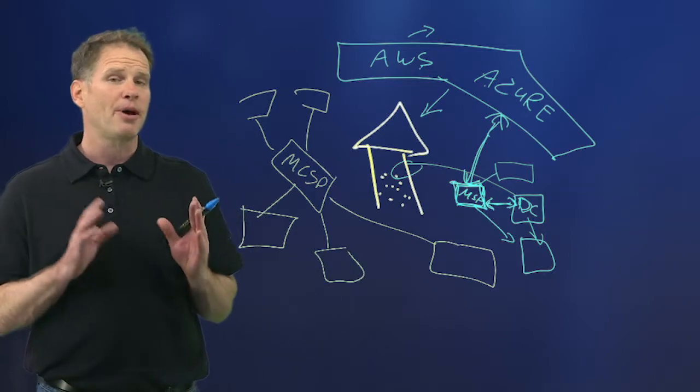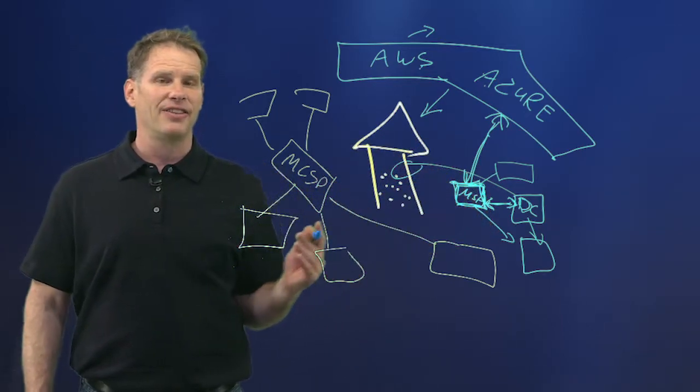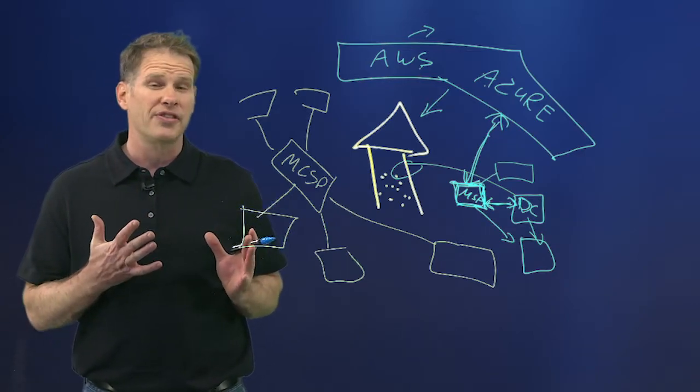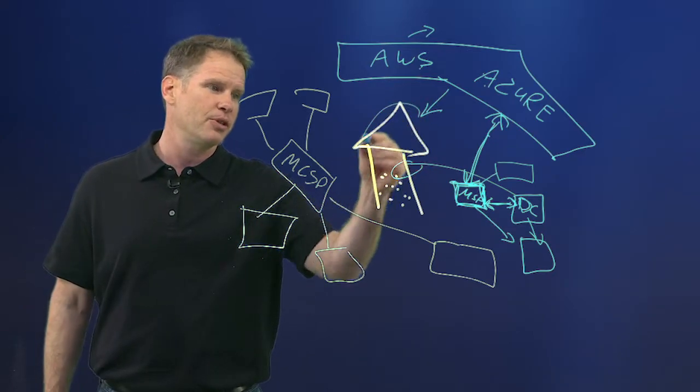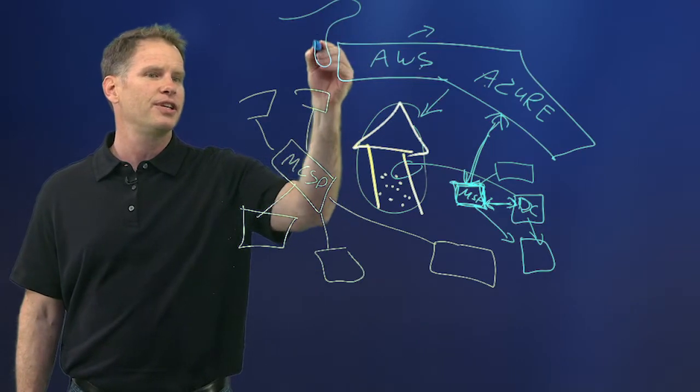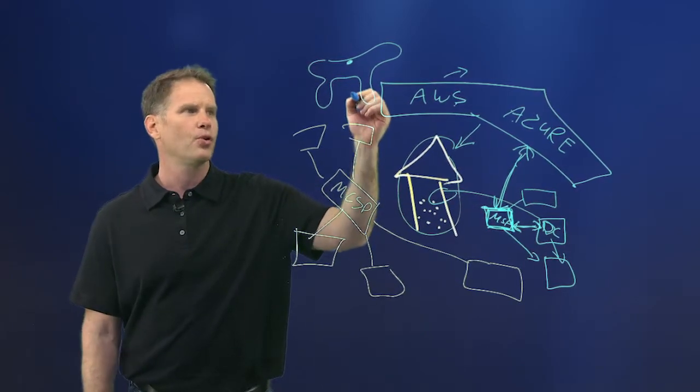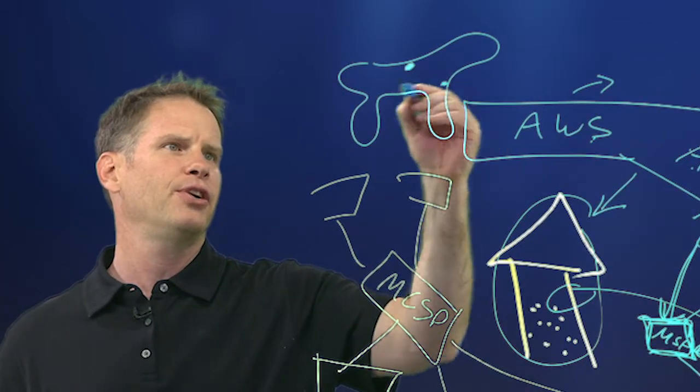Also, we're going to talk about latency a little bit later, but the MSP needs to have data centers close to or in the same part of the country as this business. So for instance, if the business is located in Chicago, this is the United States, not a horse, and they also have a business here and a business here. That's California.